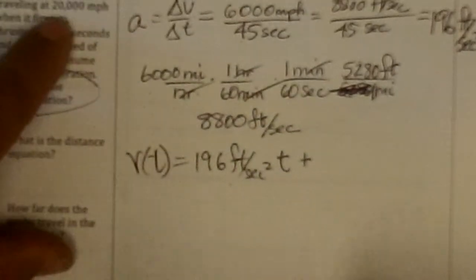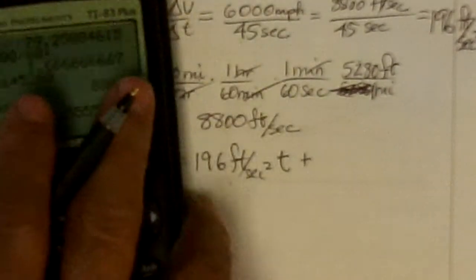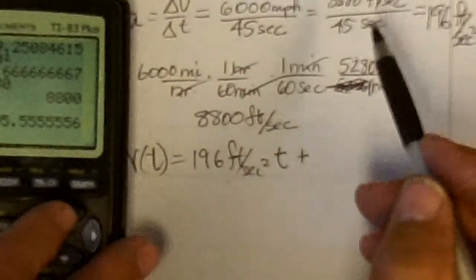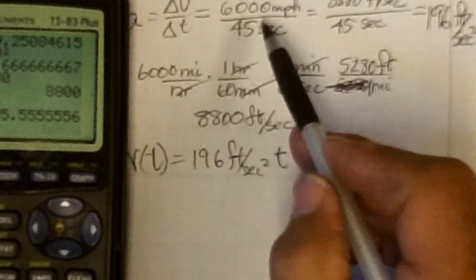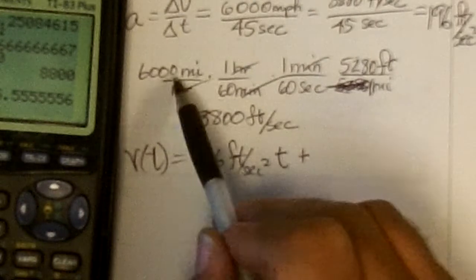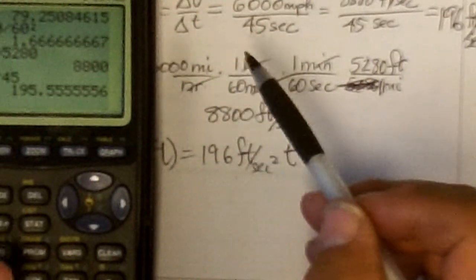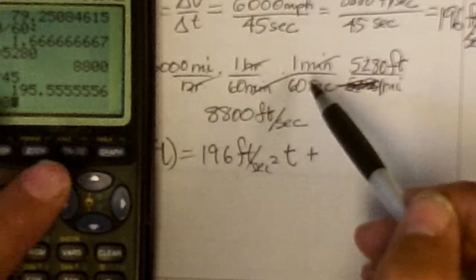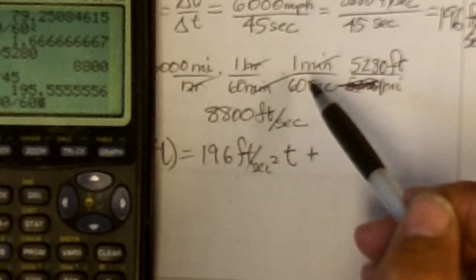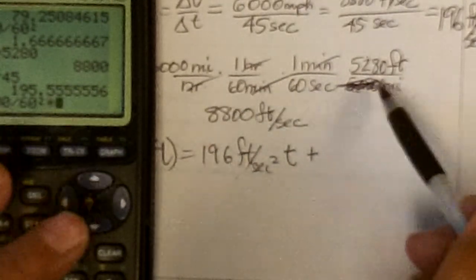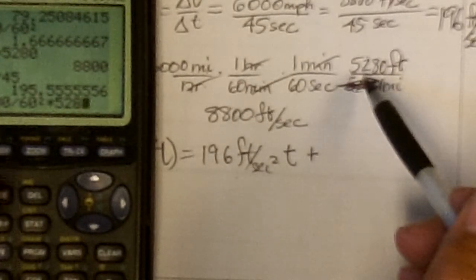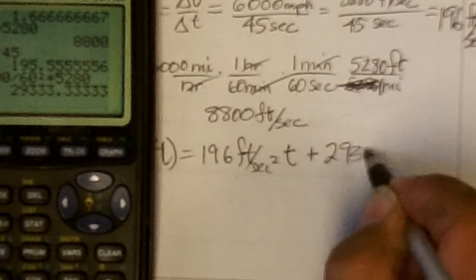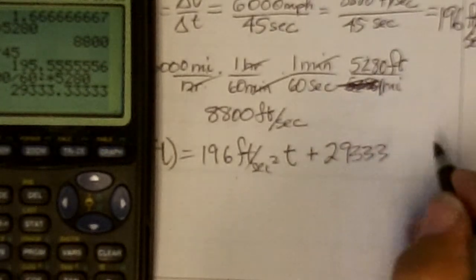And that was 20,000. So now I gotta do the conversion for 20,000. I'd have to take 20,000 divided by 60 squared times 5,280. And that is 29333 feet per second.